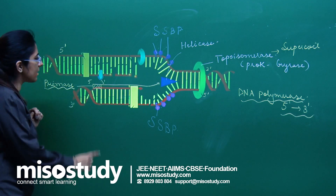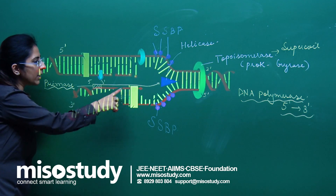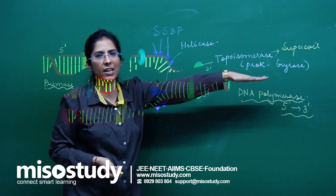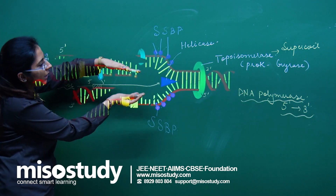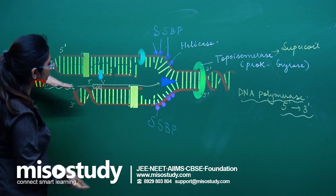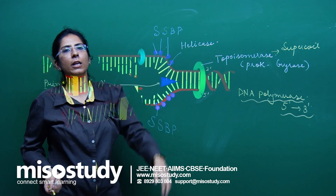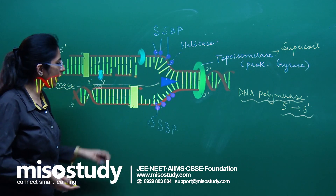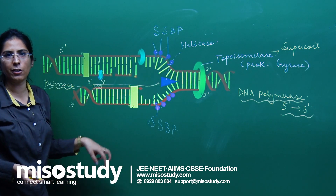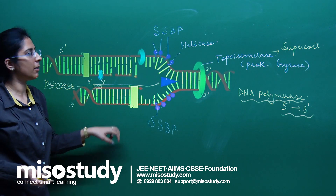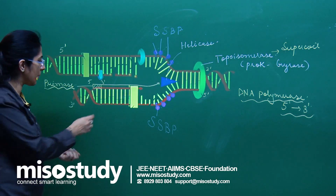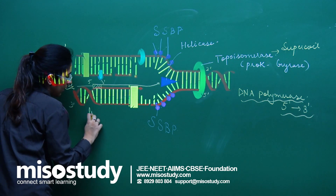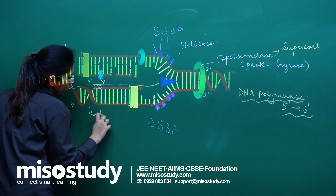Because helicase is continuously moving and opening the fork, DNA polymerase also keeps on synthesizing in the same direction continuously. This type of strand, formed in a continuous fashion, is called the leading strand.